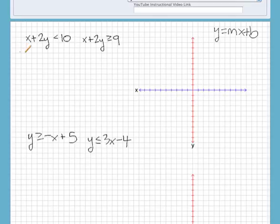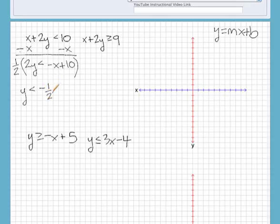So we need to isolate y. The first thing we're going to do is subtract the x over to both sides. So we get 2y is less than negative x plus 10. And then instead of divide by two, I'm going to times both sides by one-half. It's the same thing, just a different way of looking at it. So I'm going to get y is less than negative one-half x, and then half of 10 is 5. So there's one equation.